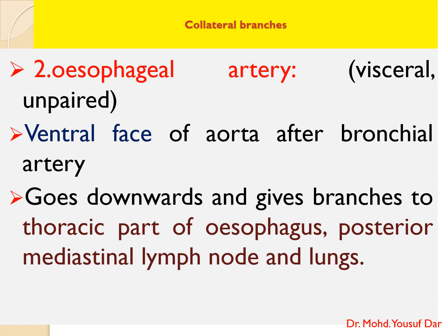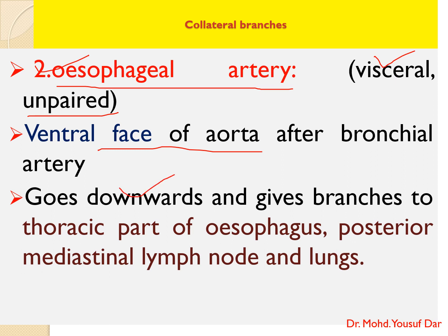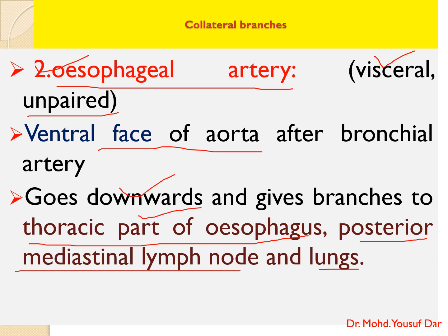The second collateral branch is the esophageal artery. It is also a visceral artery and unpaired. The esophageal artery arises from the ventral face of the aorta after the bronchial artery, goes downwards, and gives branches to the thoracic part of the esophagus, the posterior mediastinum lymph nodes, and the lungs.